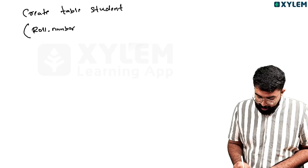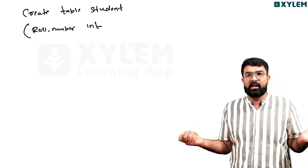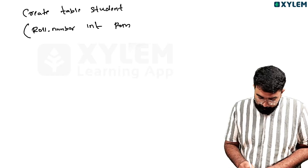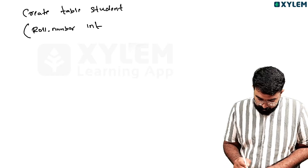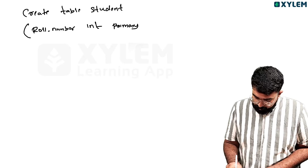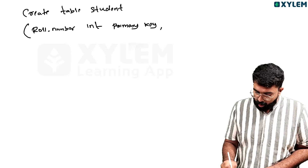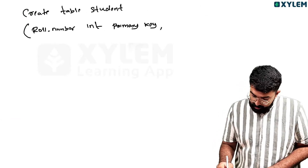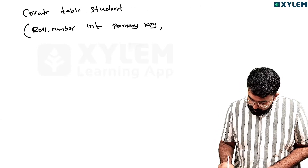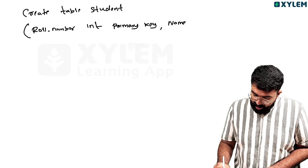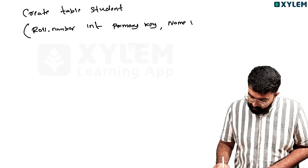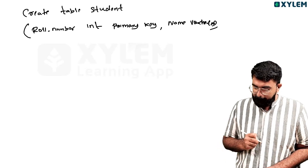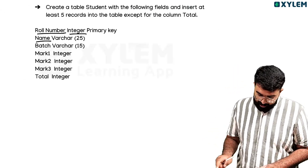So we start with the roll number as integer, then primary key. The next column is name, with datatype varchar of 20 or 25.